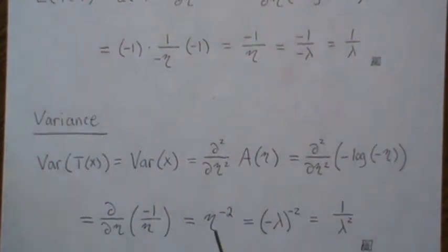We end up with eta to the minus 2, or 1 over eta squared. Now we put in what we know for eta, which is minus lambda, and then we square it and we get 1 over lambda squared, which we know to be the variance of our exponential distribution.